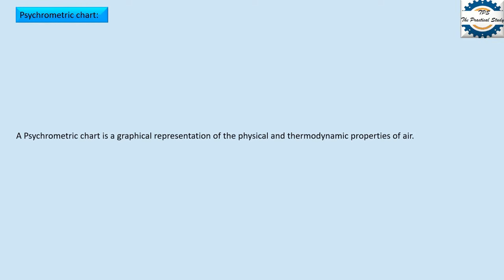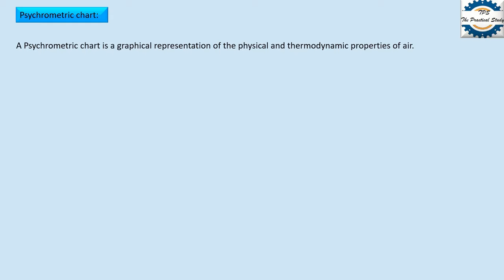A psychrometric chart is a graphical representation of the physical and thermodynamic properties of air. Whenever you are going to do air conditioning, you have to change the properties of air, and if you want to change the properties of air, you must need to know how to measure them. So the psychrometric chart is used to measure the properties of air.